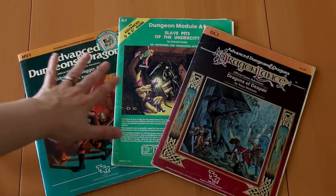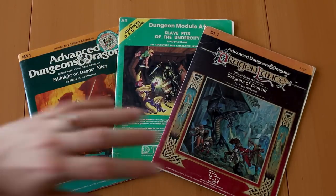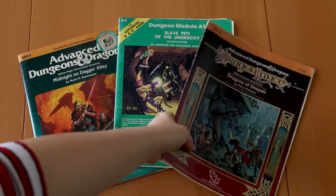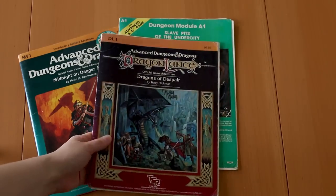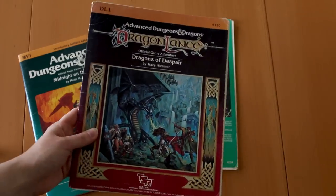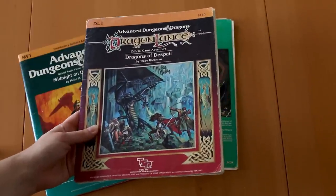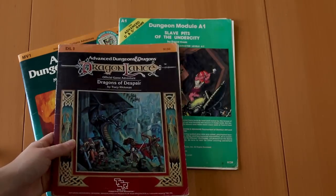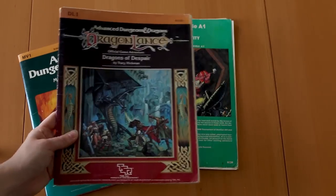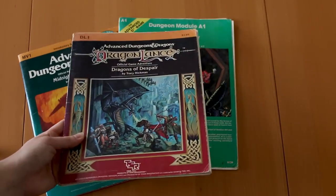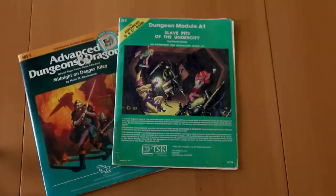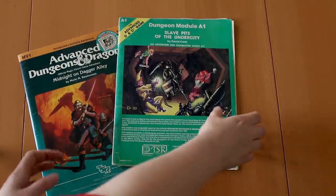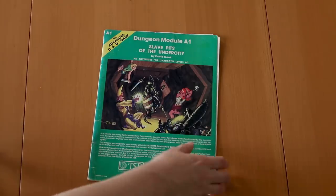These are the three campaign books that we also found with the other books. So this one, I will not be showing any more of other than that because I have the intention of running this on Twitch stream at some point with some friends. So I don't want to reveal anything that happens inside this story. But there we go. Let's get rid of that. But the other two, let's go. So we have, first of all, Slave Pits of the Undercity.